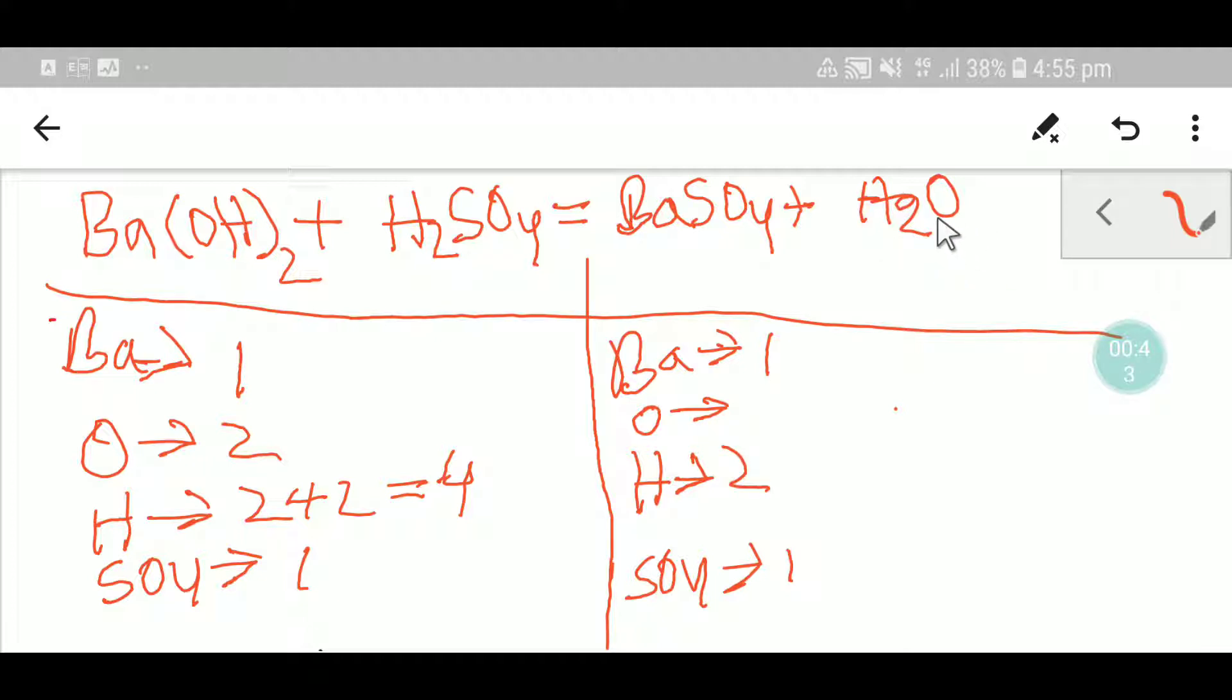Our barium is balanced, but oxygen is not balanced and hydrogen is not balanced. So to balance the hydrogen, I can multiply water by two, that gives me four.